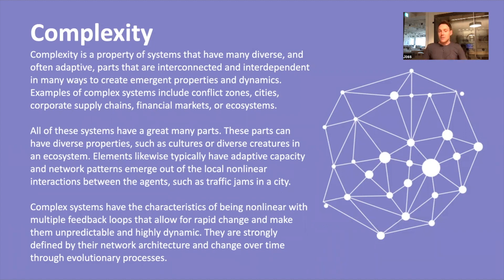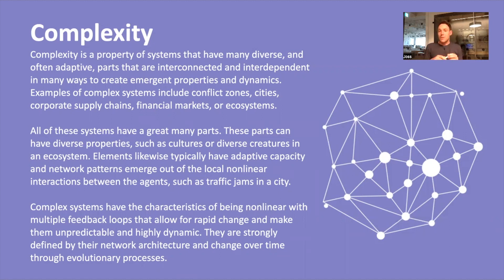Because of that high level of interconnectivity and interdependence, we need to understand them as networks as well. This aspect of evolution means no one's in control in a complex system — evolution acts on the system to select those best suited, and those are the ones that survive and get replicated, while the others die out. That's how the system changes at the macro level over time.